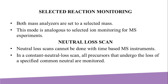The third scan experiment is neutral loss scan. The first mass analyzer scans the masses, and the second mass analyzer also scans but at a set offset from the first, corresponding to a neutral loss commonly observed for a class of compounds. Neutral loss scans cannot be done with time-based MS instruments. In a constant neutral loss scan, all precursors that undergo the loss of a specific common neutral are monitored.